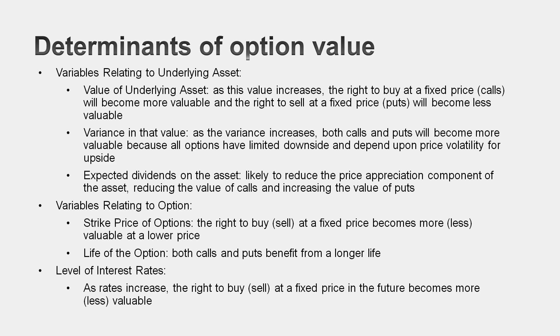Once you decide your option has exclusivity, we know there are only six determinants of option value. Three relate to the underlying asset: the value of the underlying asset itself; the variance in that value — as variance goes up, your options become more valuable, which is where asset pricing gets turned on its head, because in a DCF model risk reduces value, but in an option pricing model risk increases value since you're protected on the downside; and whether that asset pays a dividend, which can affect the value of your option.